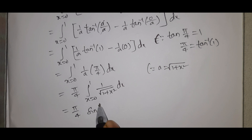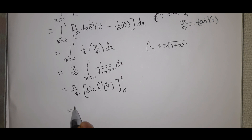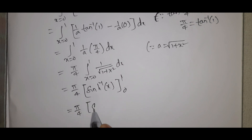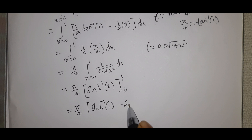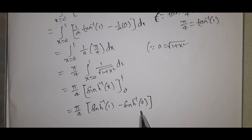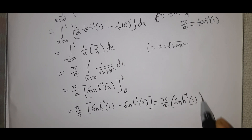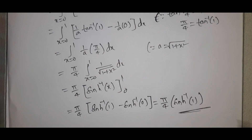Therefore we get (π/4)[sinh⁻¹(x)] evaluated from 0 to 1, which equals (π/4)[sinh⁻¹(1) − sinh⁻¹(0)]. Since sinh⁻¹(0) = 0, the final answer is (π/4) sinh⁻¹(1).